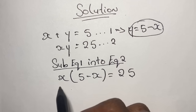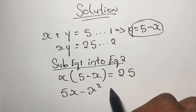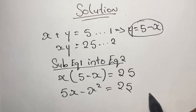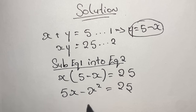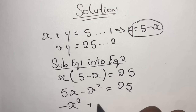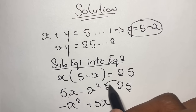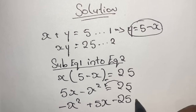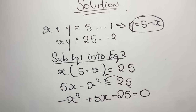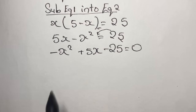We expand our brackets: x times 5 gives us 5x, and x times negative x gives us negative x squared, equal to 25. We refactor the equation with x squared at the front, giving us negative x squared plus 5x equals 25. Taking 25 to the left-hand side, we have negative x squared plus 5x minus 25 equals zero.